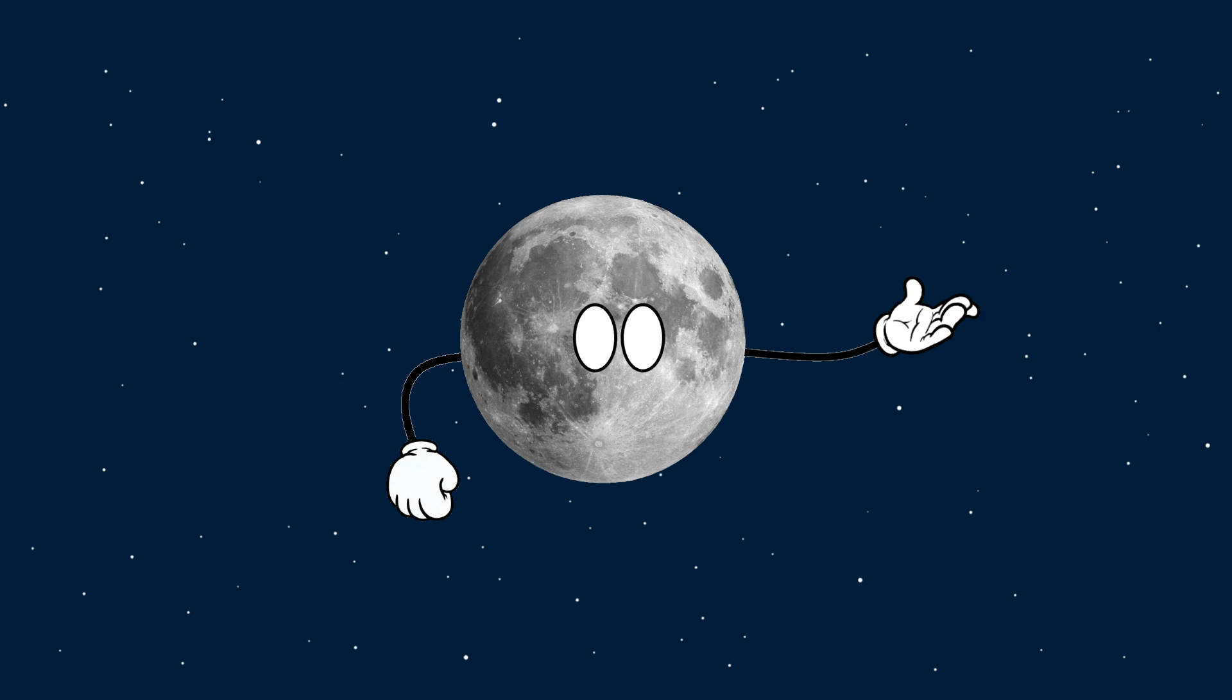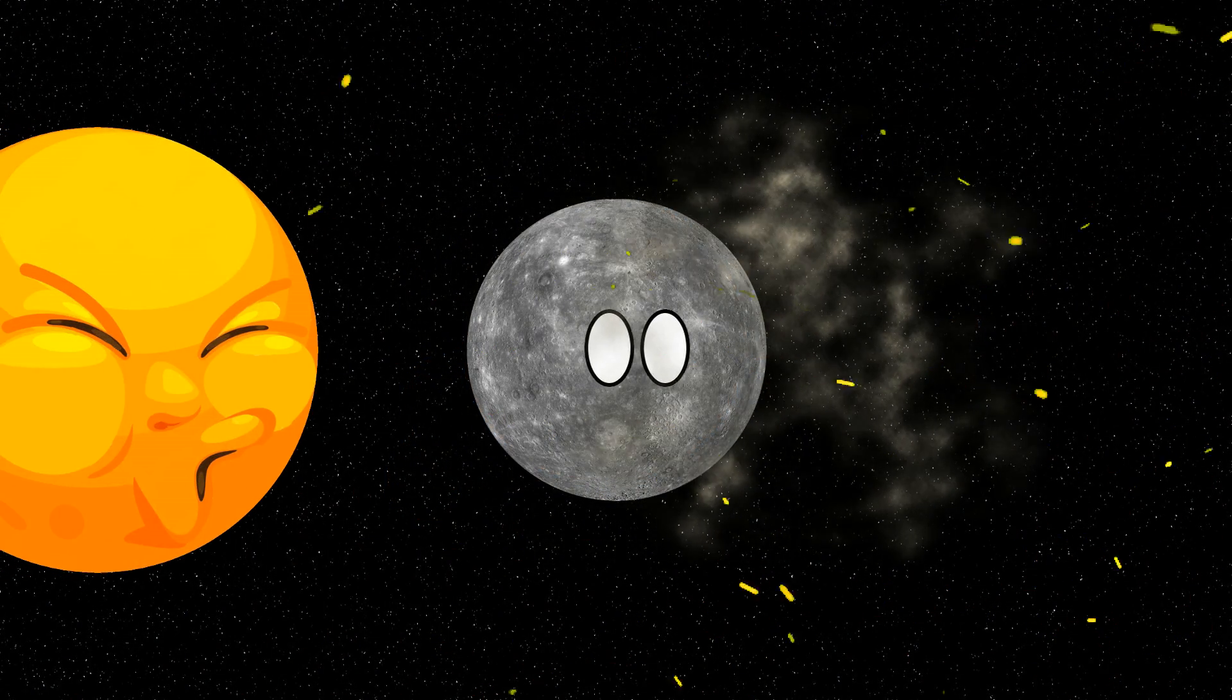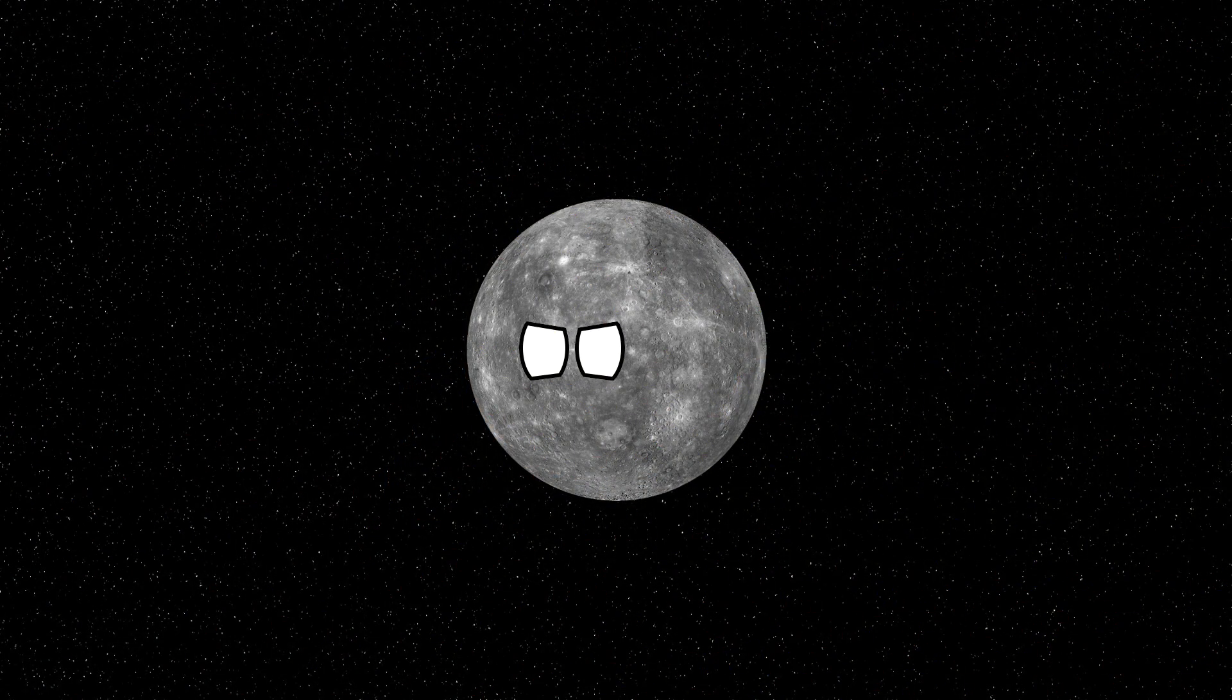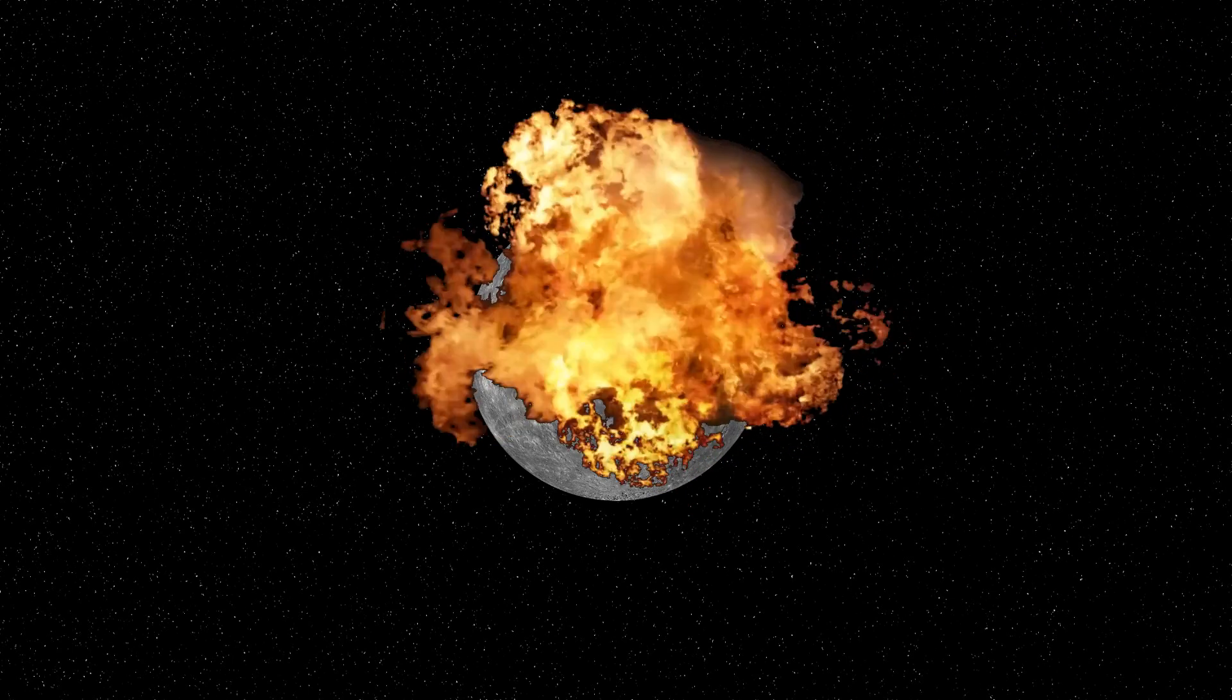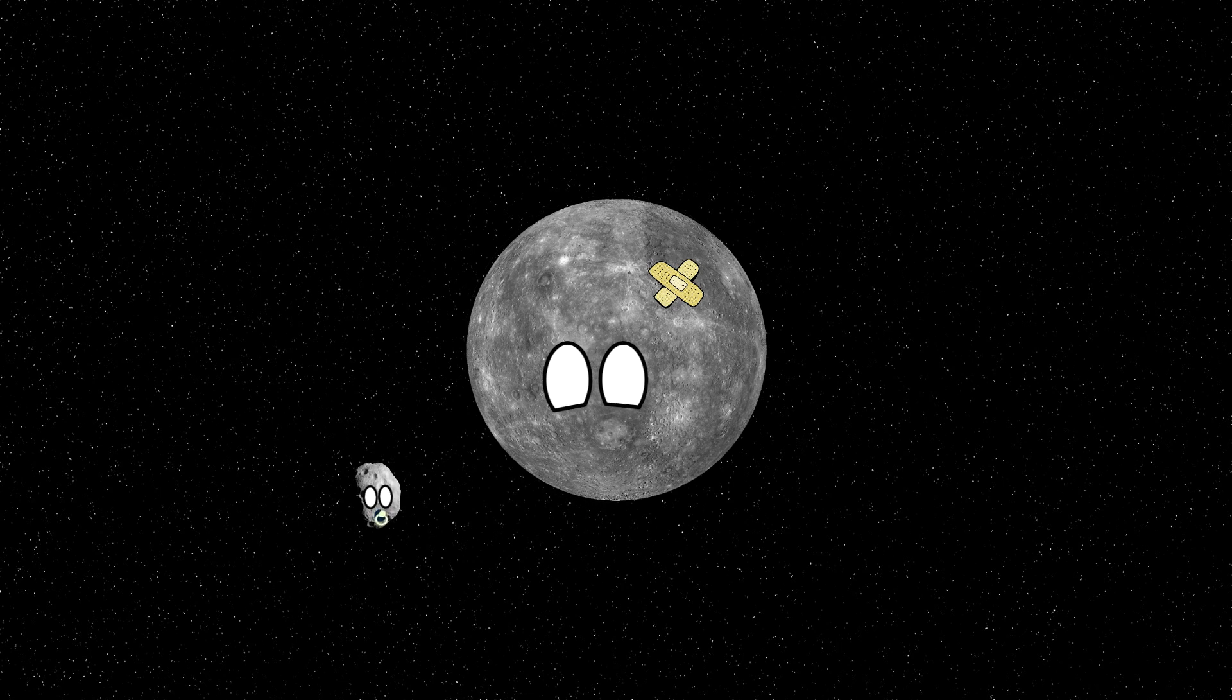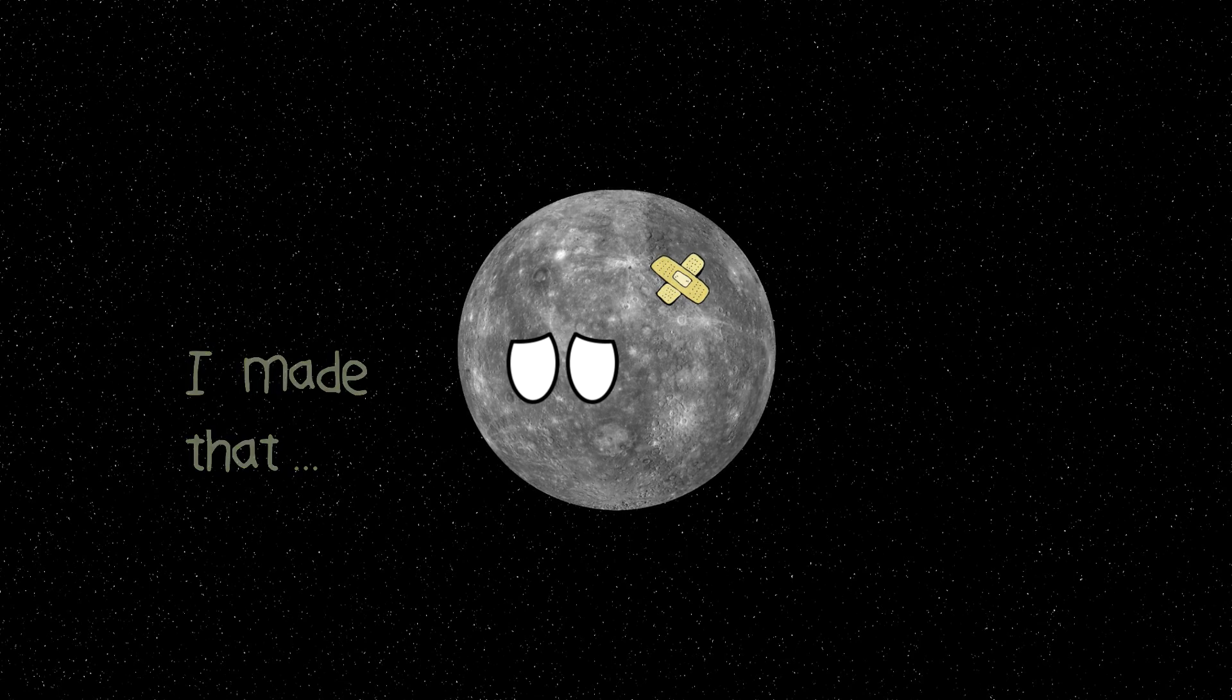So, there you have it, Mercury was doomed to be moonless from the start. The young sun blew away all the material it could make a moon from, then it pulled away anything that could have been a moon towards itself, and if Mercury somehow managed to nurture a moon after a massive impact, the sun took that one away too. Sorry Mercury, it was just never meant to be.